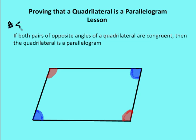Number five: if both pairs of opposite angles of a quadrilateral are congruent, then the quadrilateral is a parallelogram. This time we're not going to draw our auxiliary line. The proof for this is a little bit different than numbers two, three, and four. Remember, number one was basically a definition of a parallelogram.